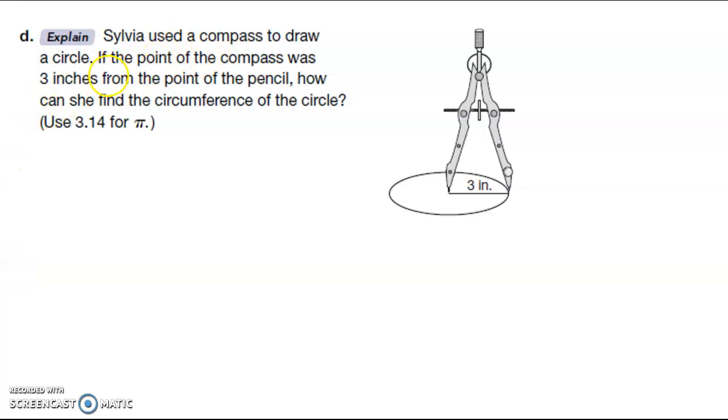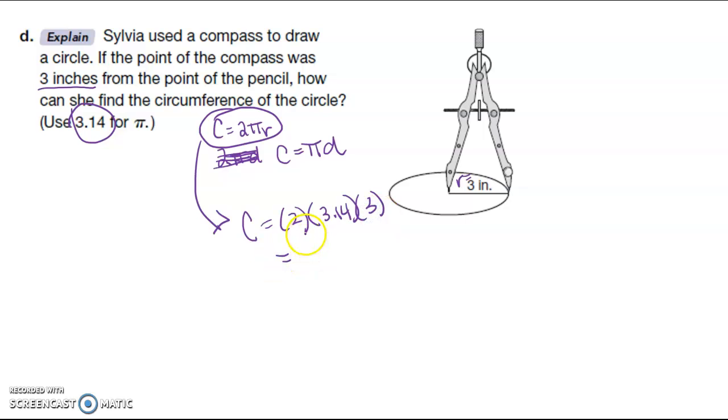Sylvia uses a compass to draw a circle. If the point on the compass was 3 inches from the point on the pencil, so they're saying basically that the radius is equal to 3 inches, how can she find the circumference? We're going to use the radius version. And it also tells us to use 3.14 for pi. So I have circumference is equal to 2 times 3.14 times 3 which is the radius, 2 times 3.14 times 3, 18.84, and that's in inches.